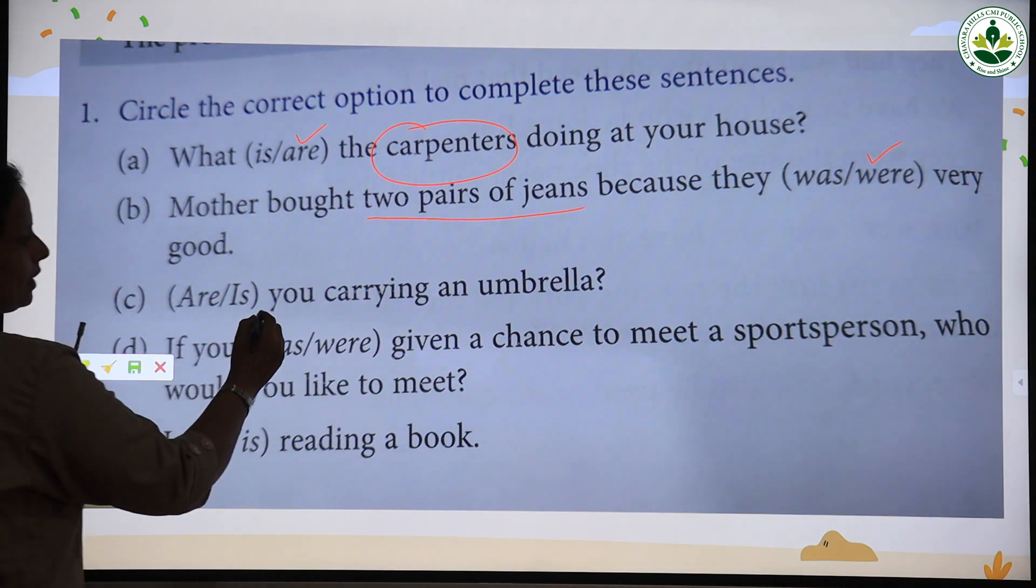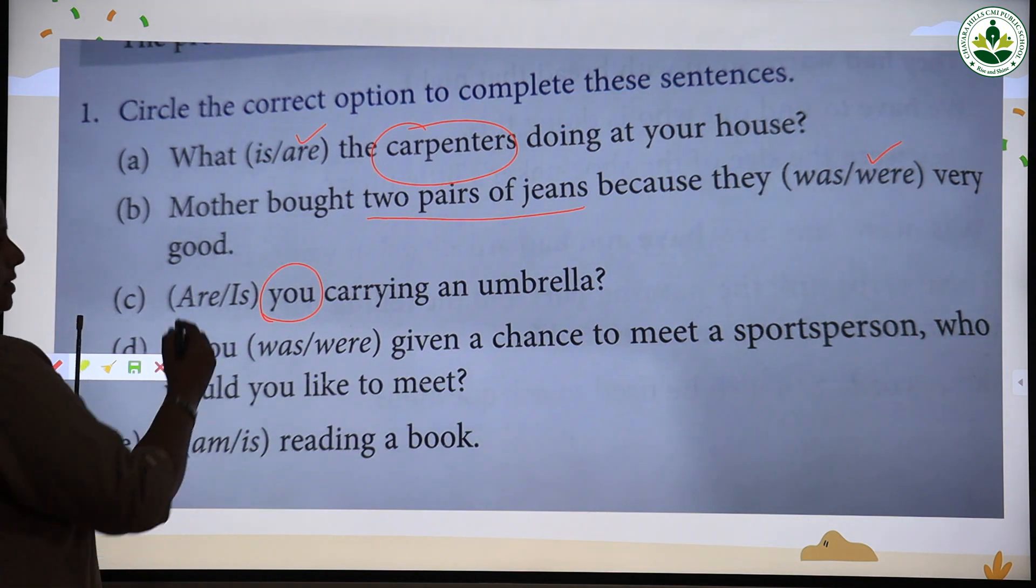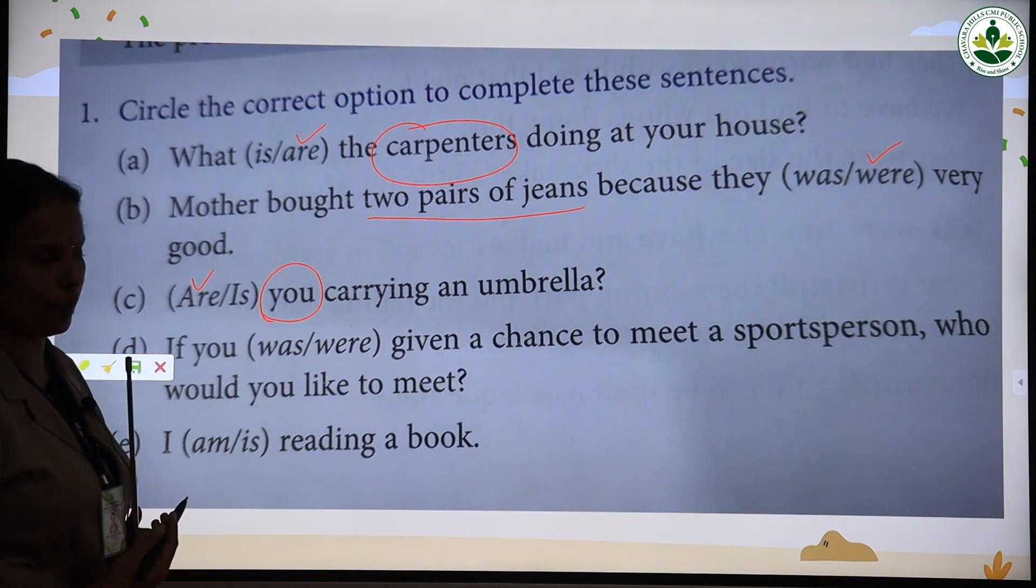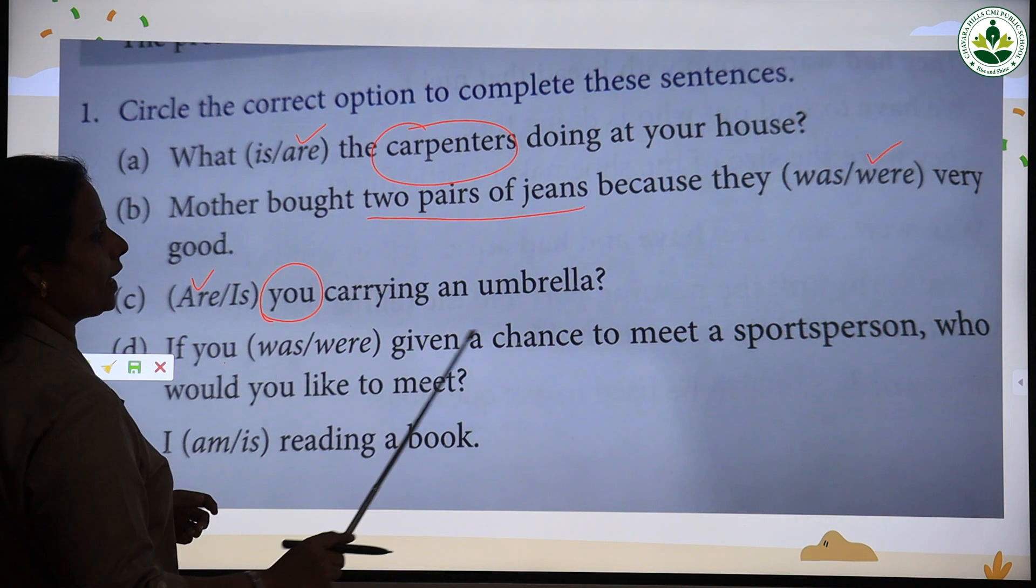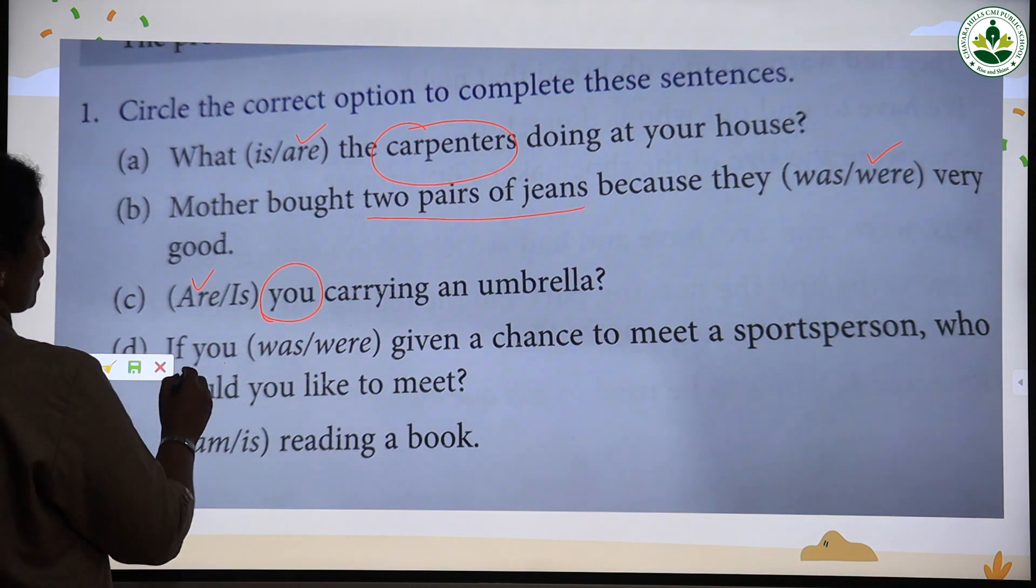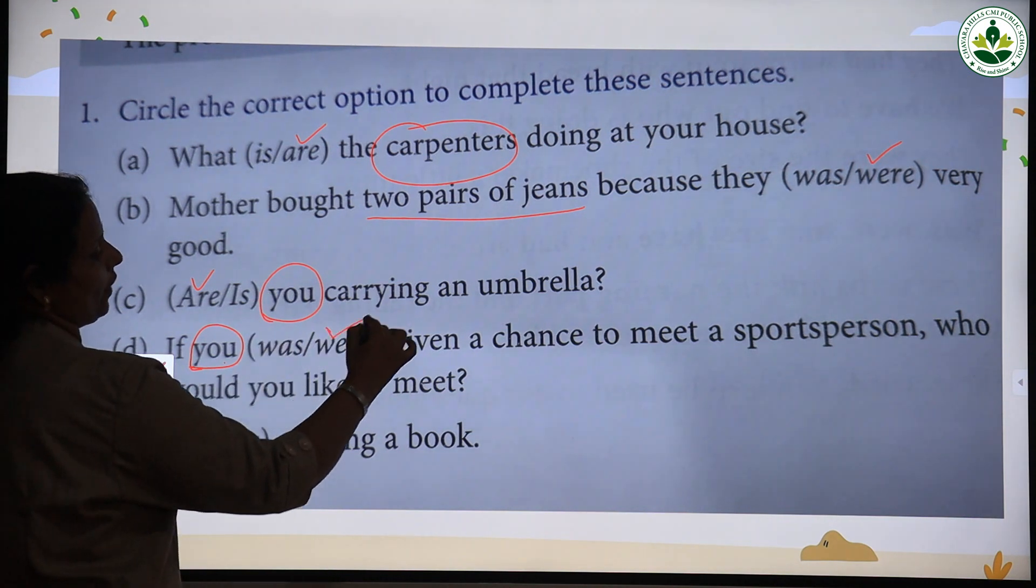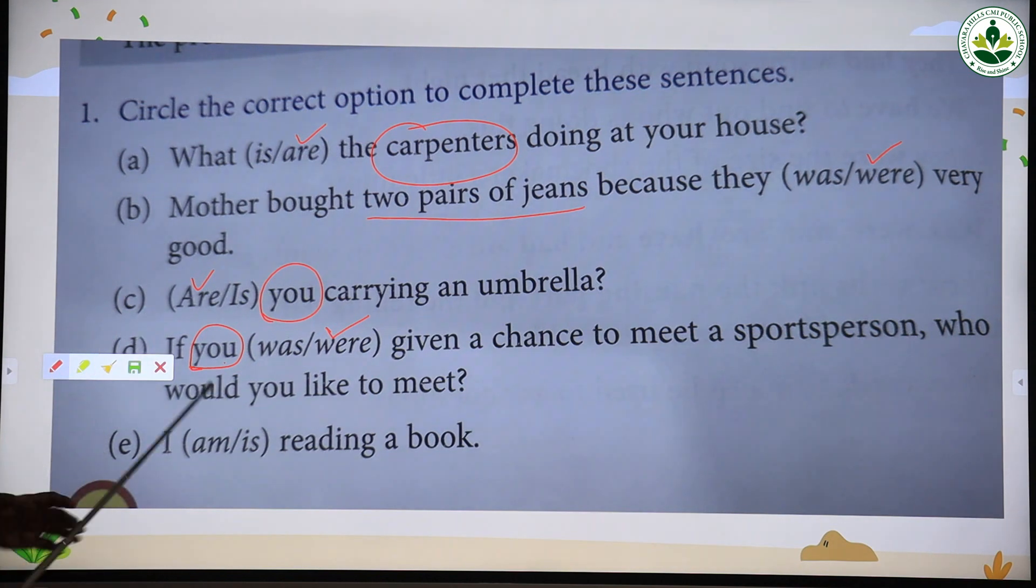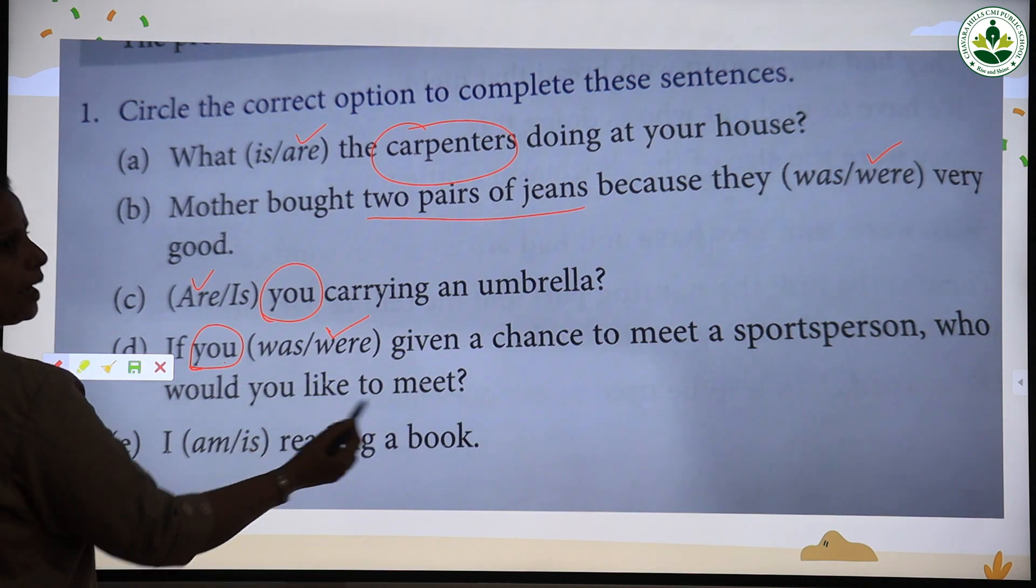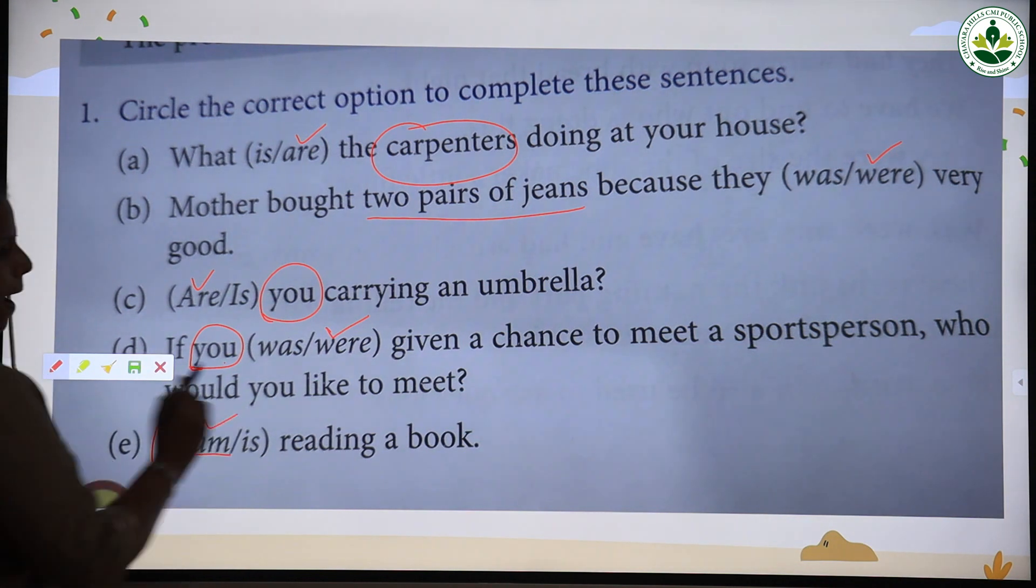Asking questions using the verbs. Are you carrying an umbrella? With the pronoun you, use are. If you were given a chance to meet a sports person, who would you like to meet? With the pronoun you, use the verb were. We never say if you was or is you. Always are you or you were. I am reading a book. Remember, always with the pronoun I use the verb am.